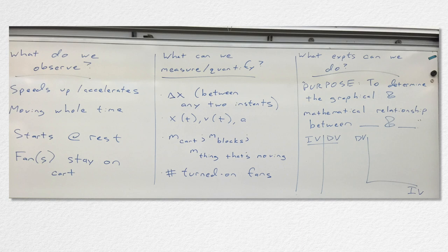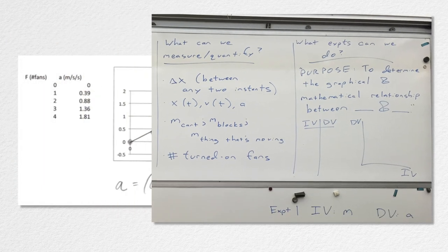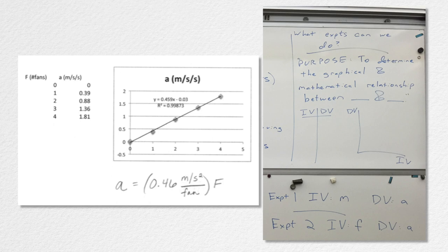In effect, that sentence stem is a request for an independent and a dependent variable, and a reminder that we're hoping to make a data table and a graph and an equation that describes the graphical relationship.